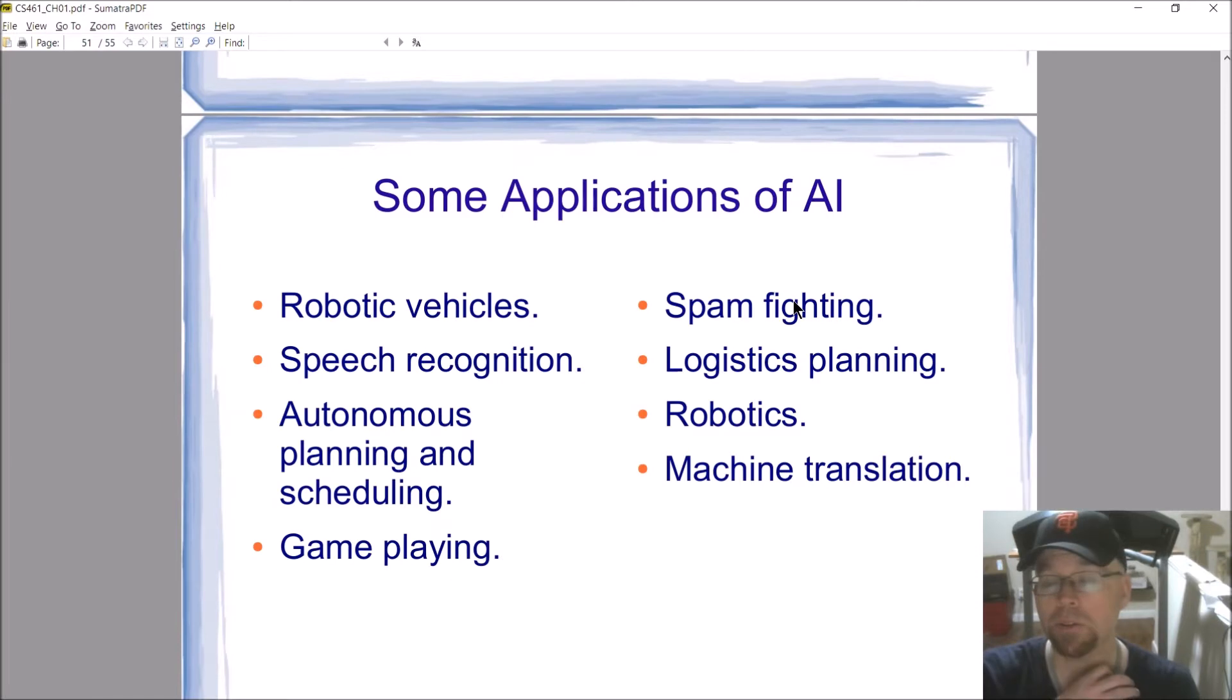So robotic vehicles are certainly being used. Speech recognition, anytime you've talked to Alexa, or if you have talked into your phone to make a text, or maybe you're on some kind of automated system. Say one if you want billing. Say two if you want to check your balance. Any of those kind of systems, speech recognition, AI.